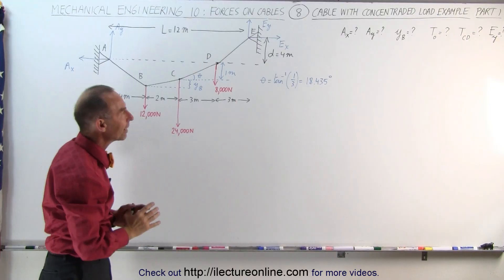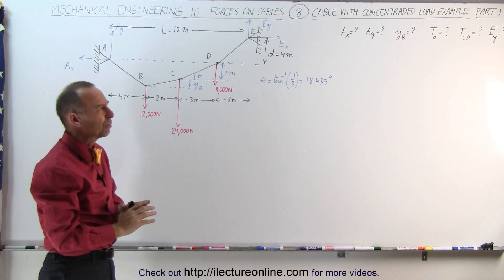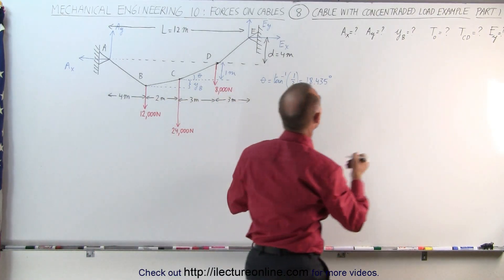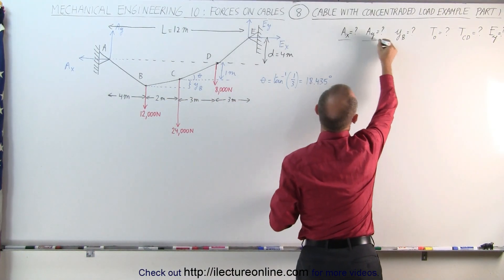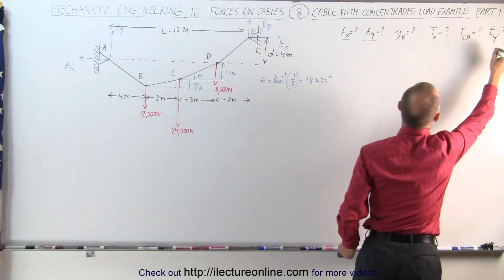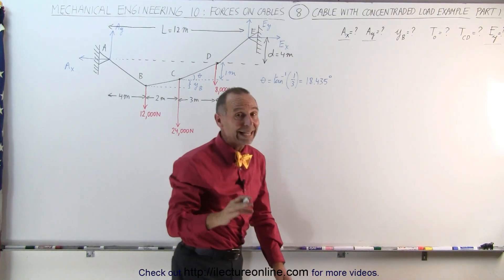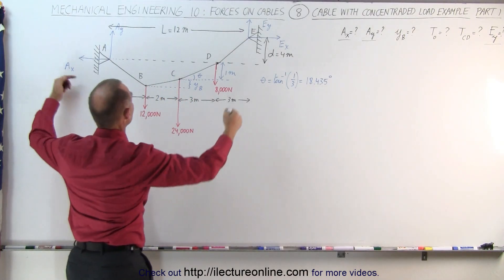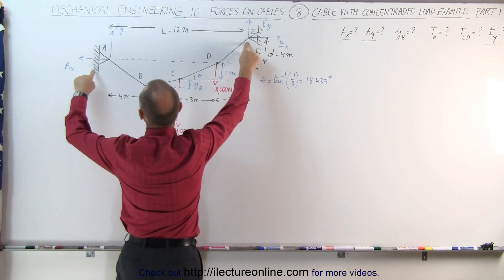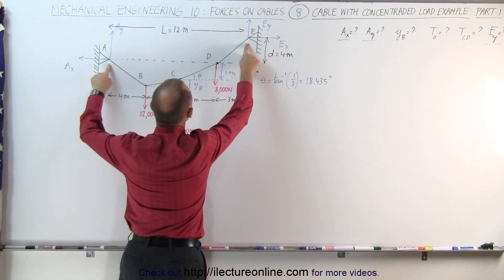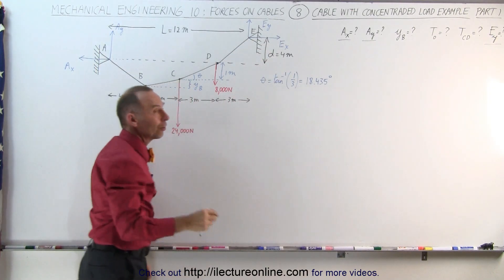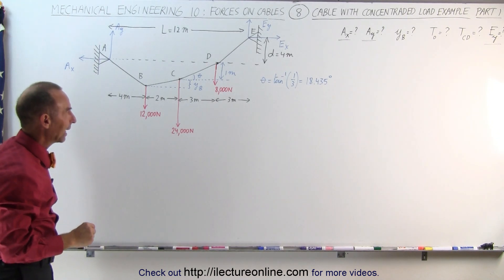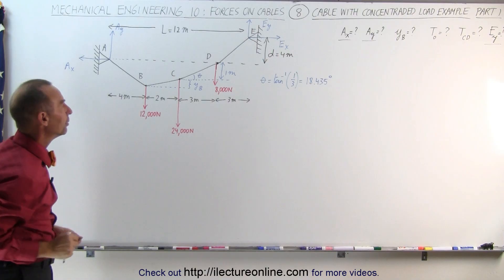That's a lot of things we're trying to find, and we're probably going to divide this into two separate parts. First, we're going to find A sub X, A sub Y, and E sub Y. Of course, A sub X and E sub X should be equal to one another — the horizontal components of the reactionary forces at the endpoints are the same. The vertical components are likely going to be different. In the next video, we'll find the other unknowns.